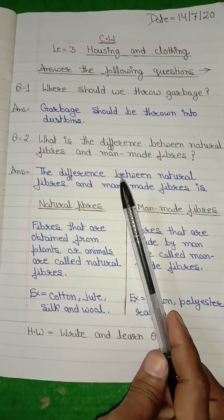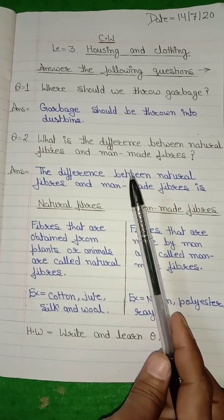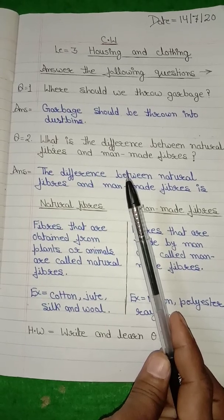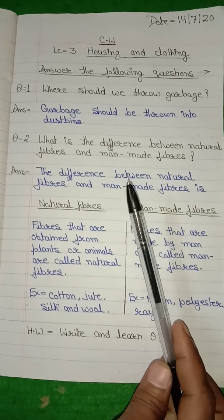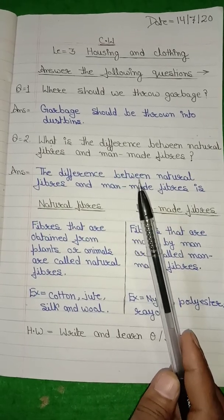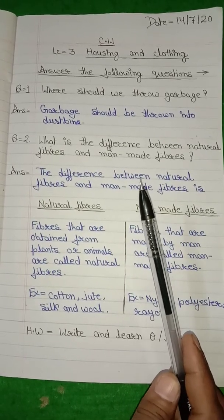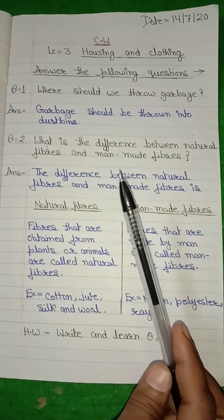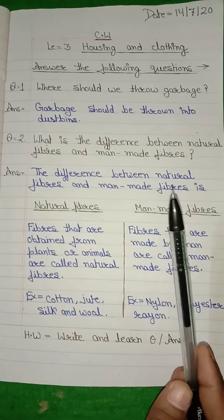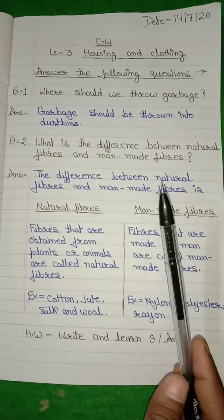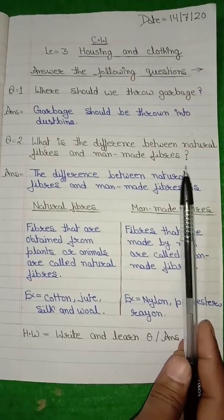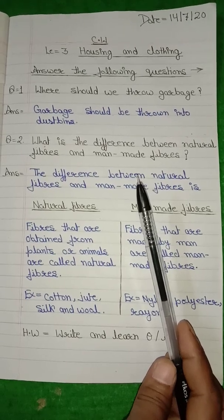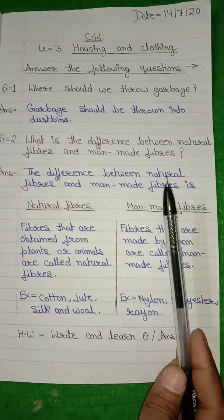Now student, what is the use of natural fibers? Cotton is an example of natural fiber — cotton se clothes bante hain. Jute se bags, ropes, aur sacks bante hain. Wool is also a natural fiber — in winter season we wear woolen clothes. Wool sheep se milta hai — woh natural fiber hota hai. Silk se bhi clothes bante hain.